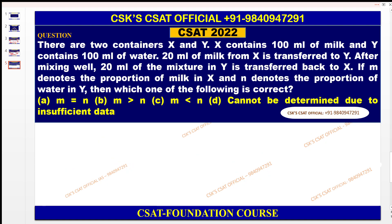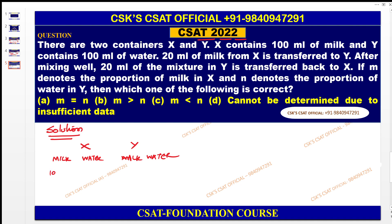Moving to 2020 — this was a lengthy question but if you read it once or twice, you can solve it in a simple manner without a formula — just have the basic idea. There are two containers X and Y. X contains 100 ml of milk, so milk = 100, water = 0. Y contains 100 ml of water, so milk = 0, water = 100.